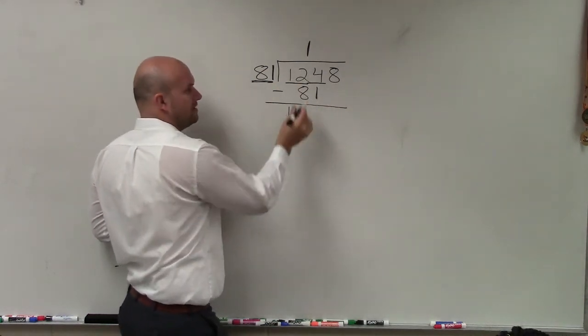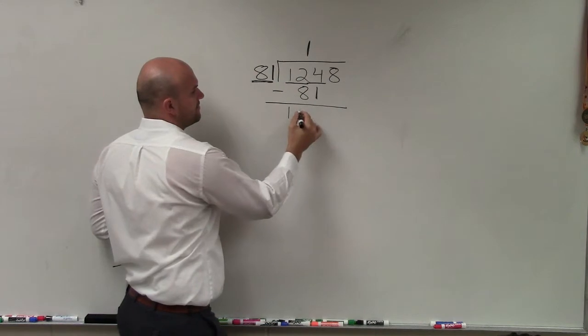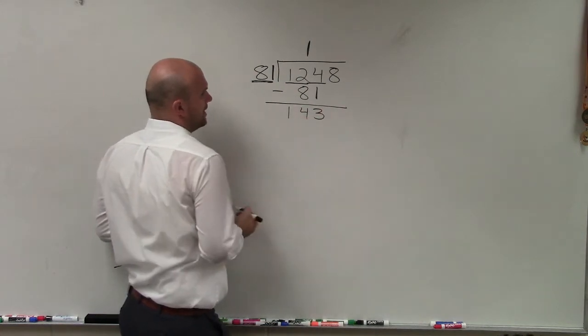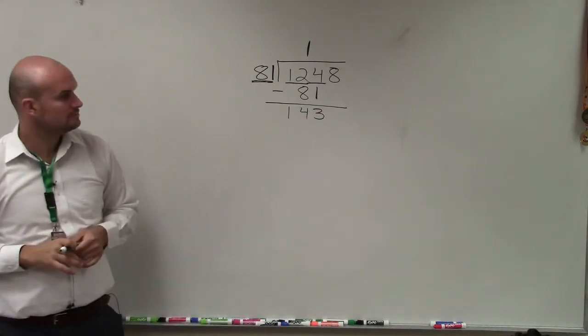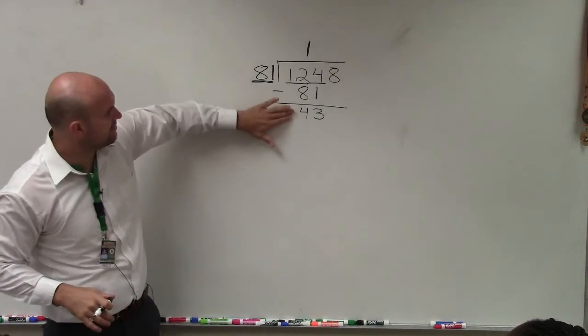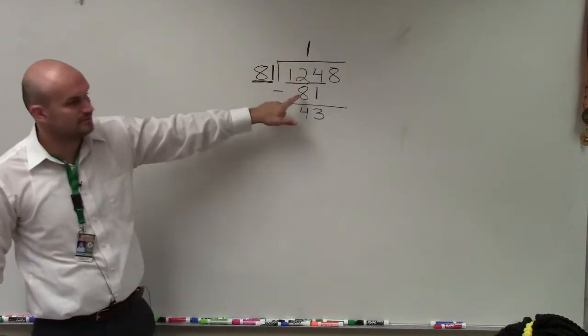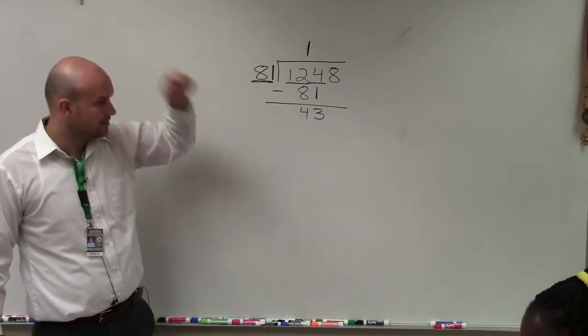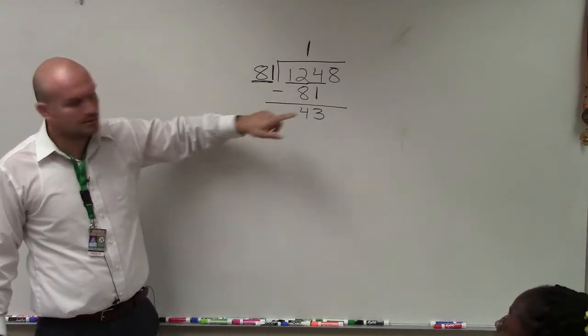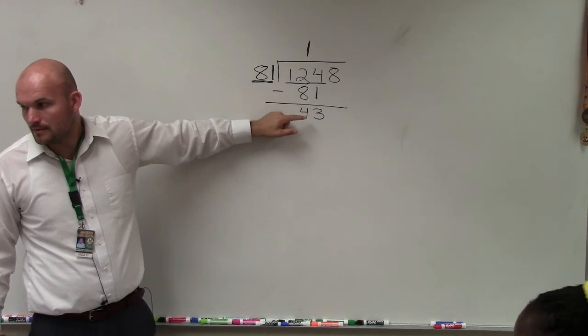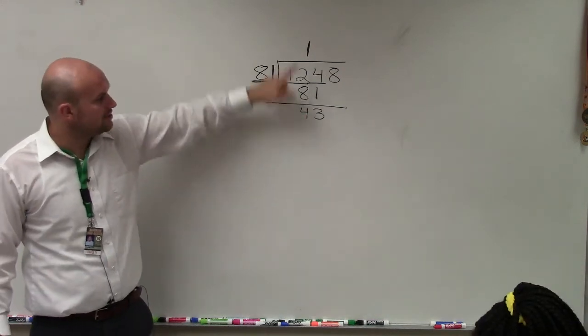So I have 1, and then this becomes 43. Oh, I'm sorry, 43. What is the 1? No, you're subtracting. Yeah, I multiplied 1 times 81. We'll get to those.